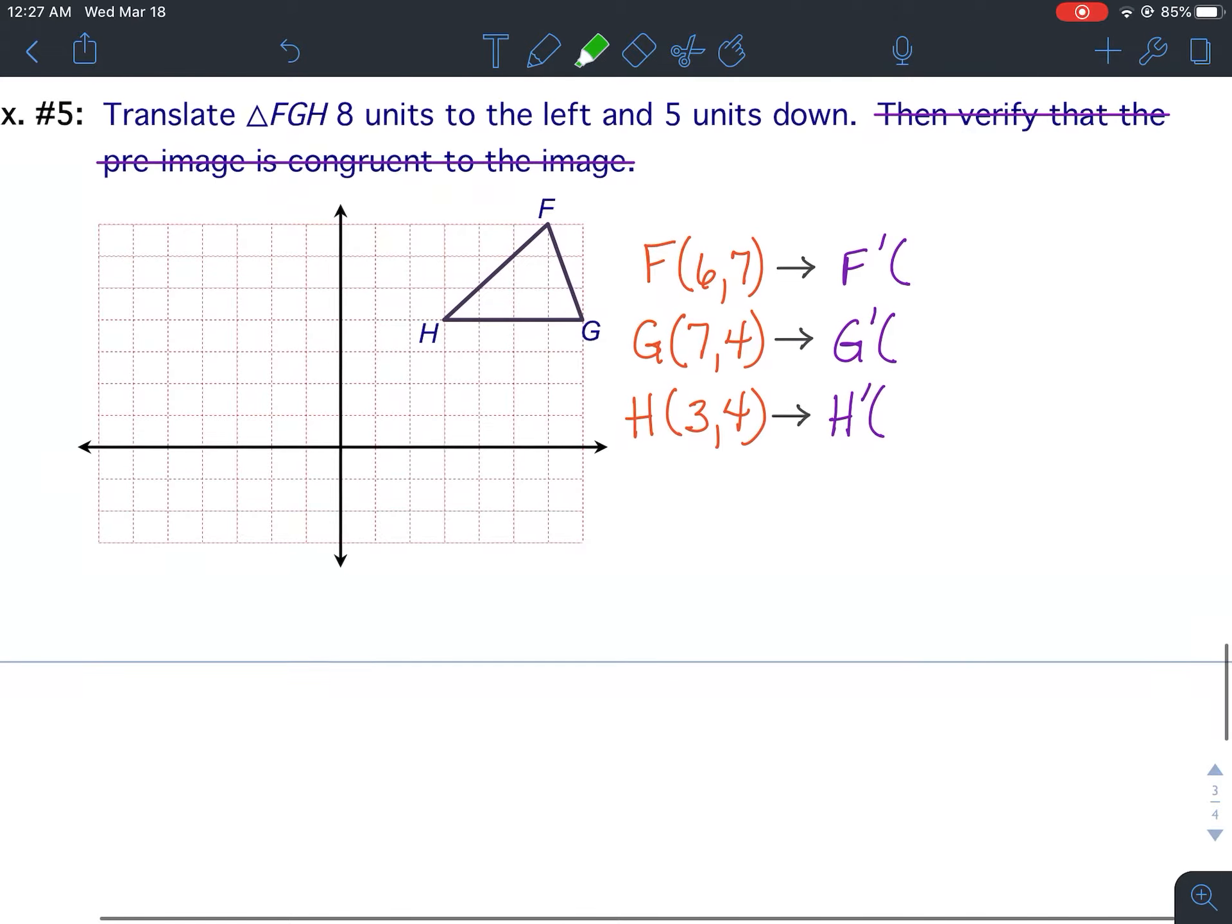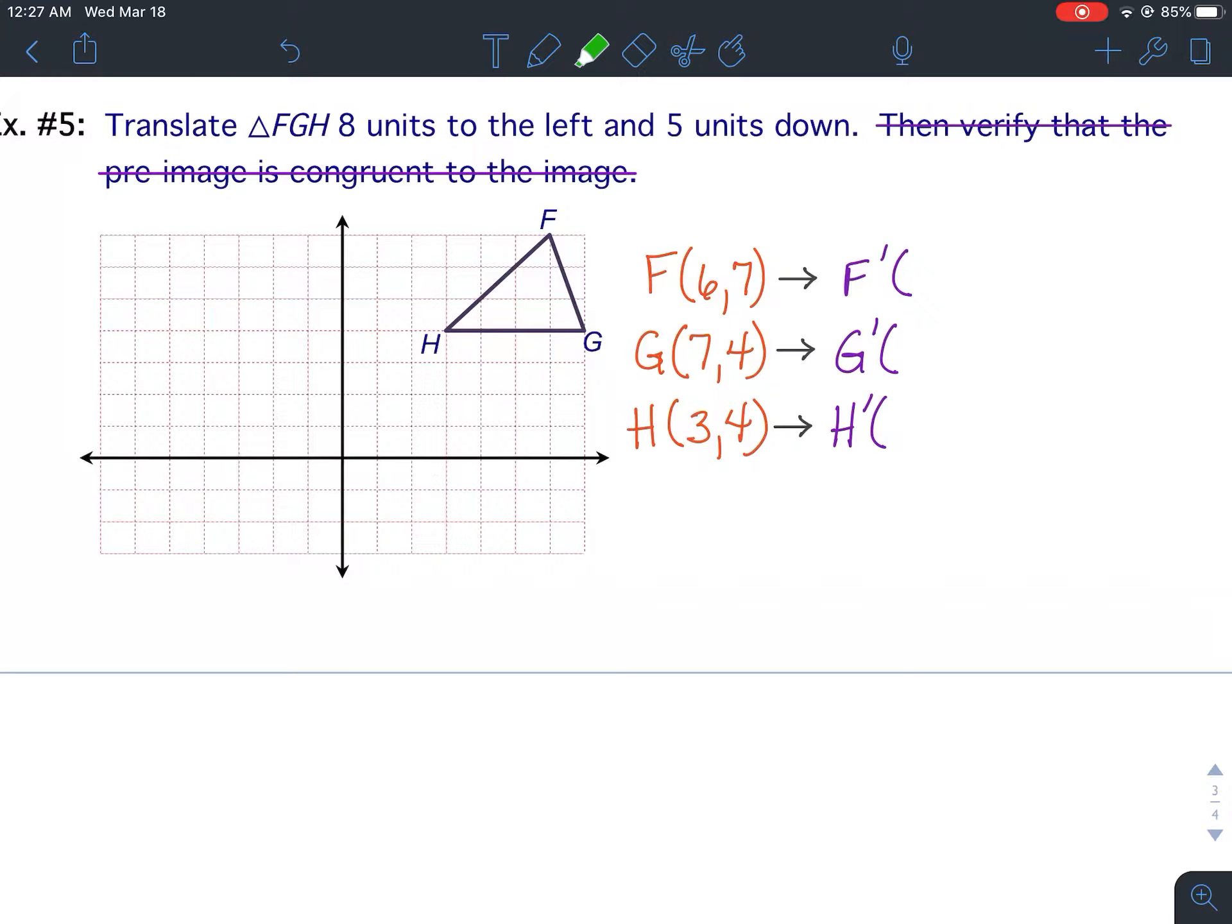All right, now on to example number five. Again, I went ahead and did the original points: F at (6,7), G at (7,4), H at (3,4) ahead of time, just to make the video a little bit shorter. So you could pause the video and write that down if you want. Leave that space above, though, to write the translation down.